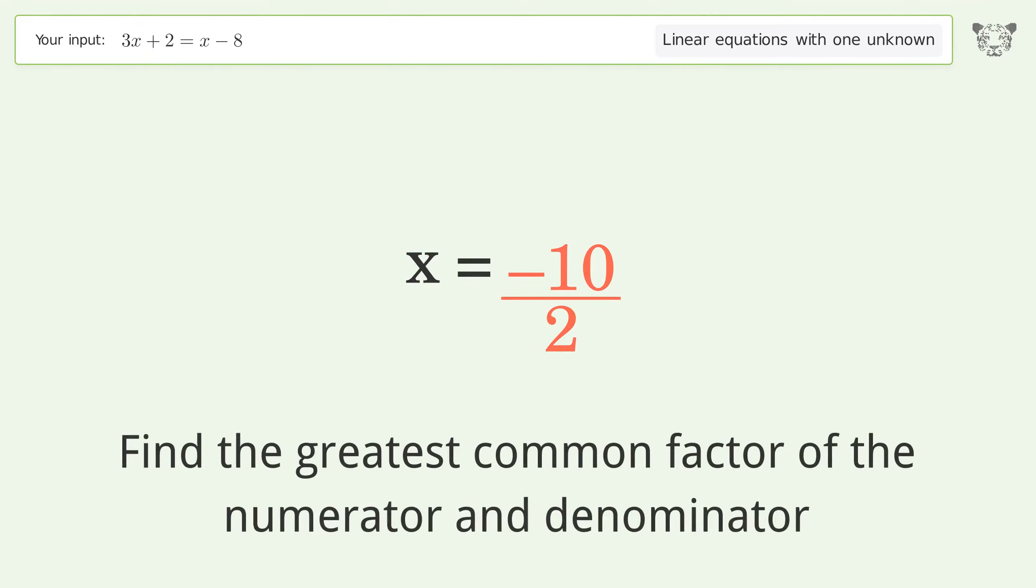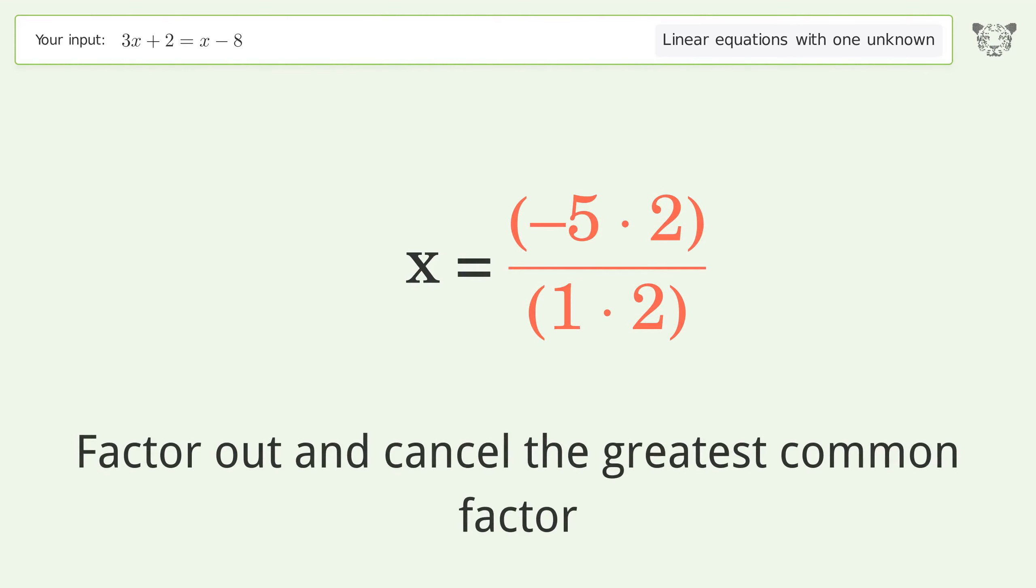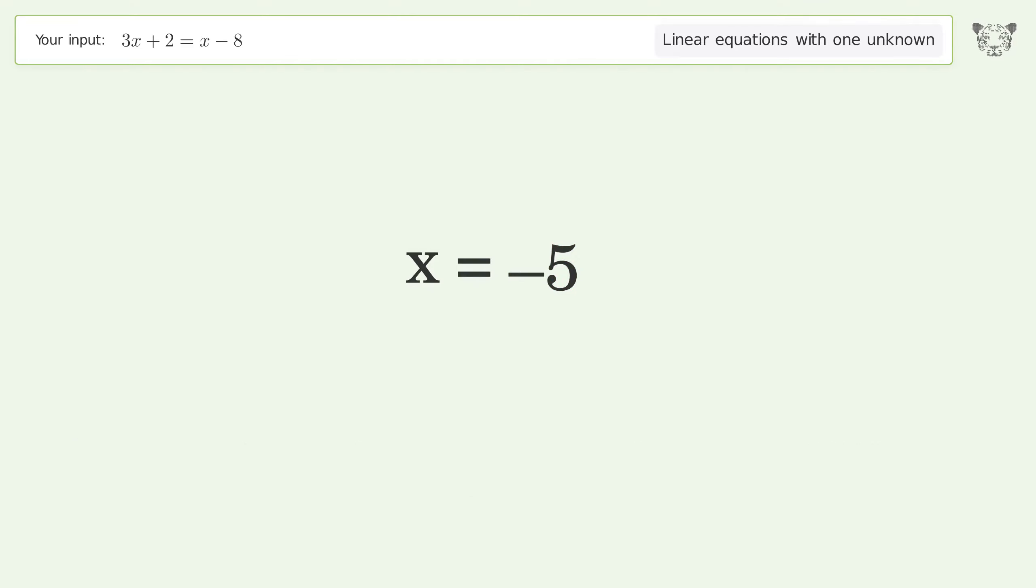Find the greatest common factor of the numerator and denominator. Factor out and cancel the greatest common factor. And so the final result is x equals negative 5.